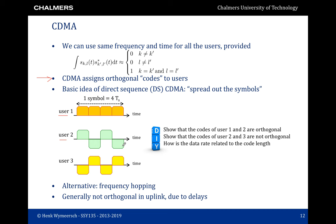From the receiver's point of view, the two signals can be completely recovered. A third user with code [−1,1,−1,1] is orthogonal with user 1, so users 1 and 3 could send simultaneously and be recovered by correlating with the respective code. However, users 2 and 3 are not orthogonal, since 1×(−1) + (−1)×1 + 1×(−1) + (−1)×1 = −4, so they should not coexist.